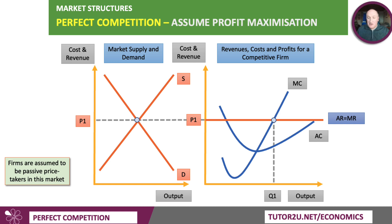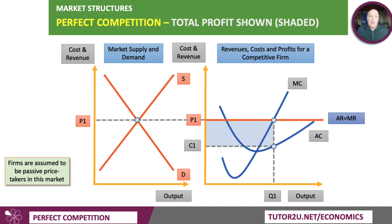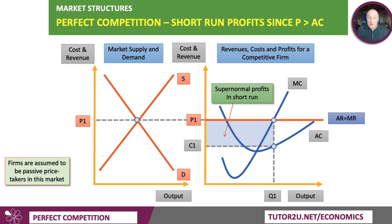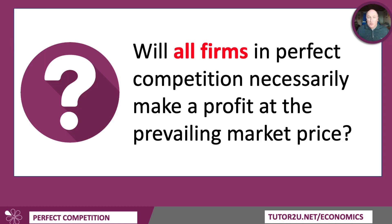A profit-maximising firm will produce at output Q1, where marginal cost meets marginal revenue. The unit cost C1 of producing this output means the shaded area represents the total economic profit made in the short run. If the market price is high enough, lots of firms in the market might be earning supernormal economic profits. Will all firms necessarily make a profit? It depends on their costs — some firms at the margin might be loss-making, while others make more profit at the same market price.